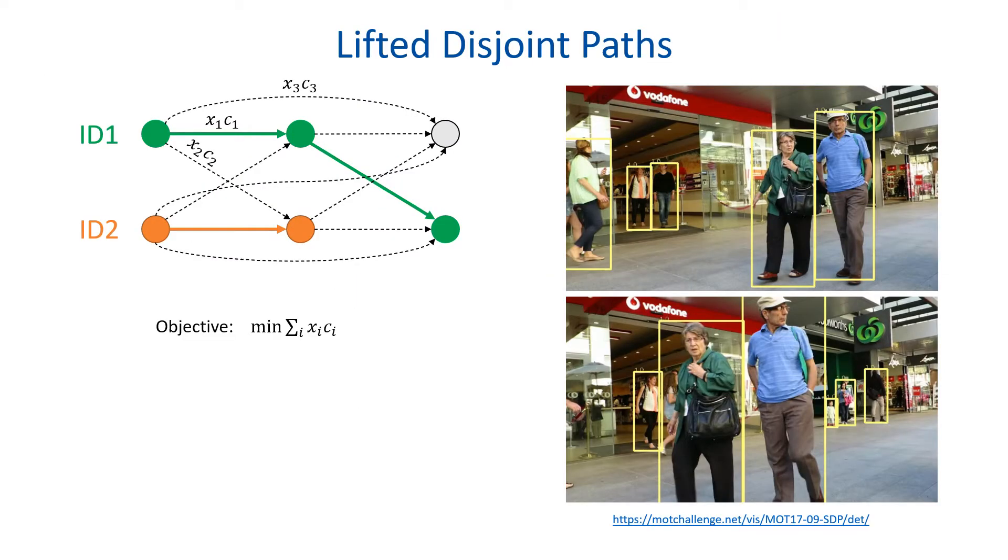The disjoint path formulation is a powerful and intuitive model for multiple object tracking. Each detection is represented as a vertex in a directed graph. Trajectories can be formed by connecting vertices with edges as shown in the figure. The set of unactivated and activated edges forms a solution space. To determine which edges should be activated, costs can be defined for all edges indicating if the vertices belong to the same person or not. The underlying problem is now to minimize the costs over all activated edges, observing the constraints that every vertex can maximally have one outgoing and one incoming edge.